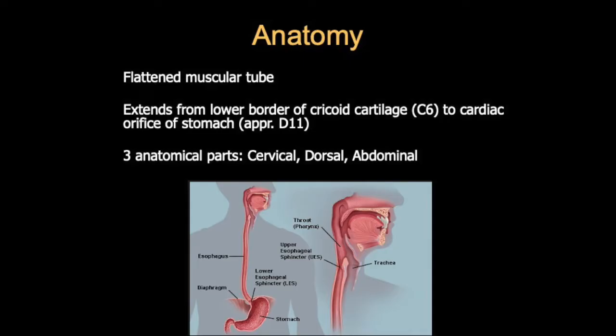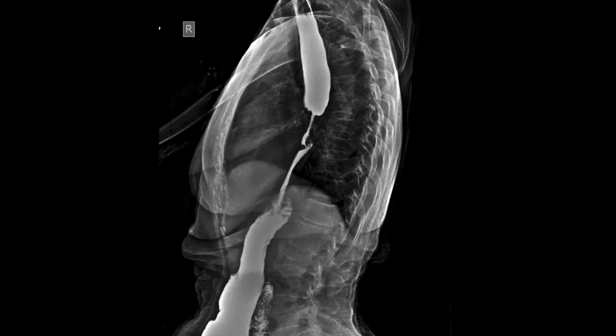Sometimes the barium swallow is replaced by the upper GI series, in which we take pictures of the esophagus as well as the stomach, including the duodenal bulb and C-loop. But for all practical purposes, today's tutorial is going to be on barium swallows.